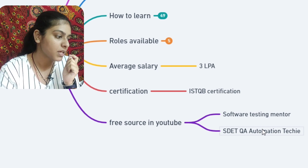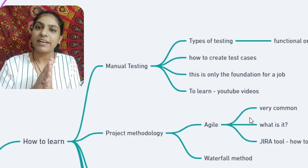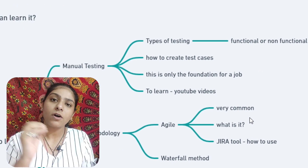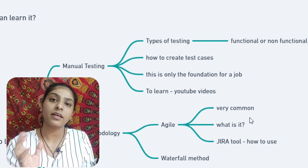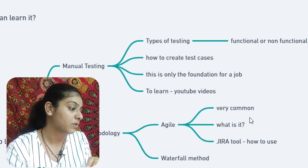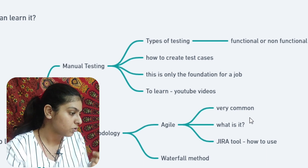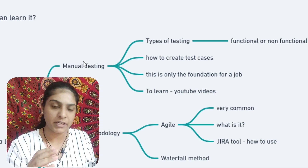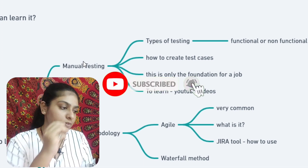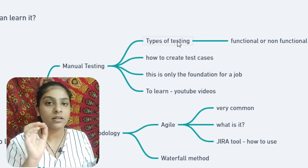Now we will get into the actual concept. To begin with testing, everyone wants to jump to automation engineer as the final step. But if you want to go to automation engineering or test automation, there are pre-requisites. The first pre-requisite is manual testing. You can learn what you can do in manual testing, then move to the automation field.